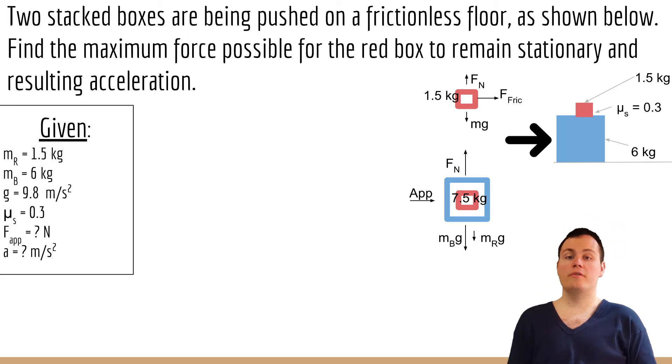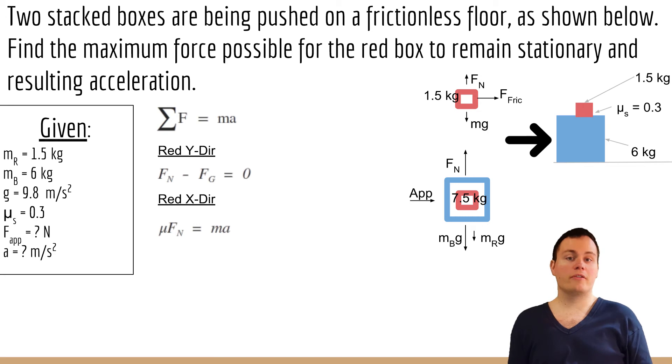To figure it out we're going to use Newton's second law: Force is equal to mass times acceleration. We're going to look at the red block in both the x direction and in the y direction. For the y direction we know that the normal force is pushing up, gravity is pulling down, and it's not accelerating in the y direction so it's equal to zero.